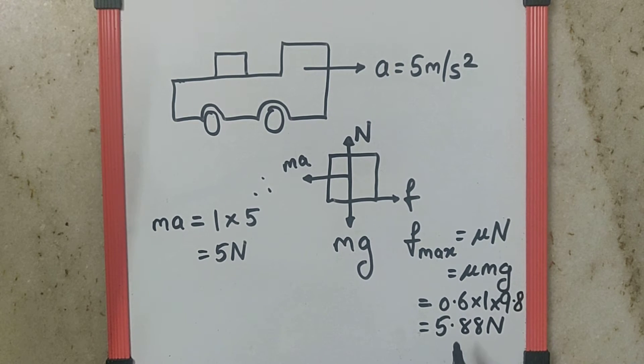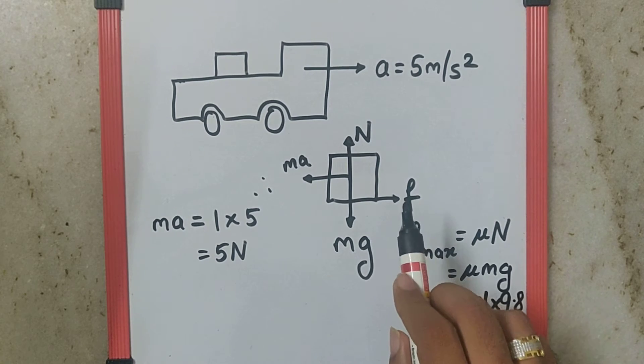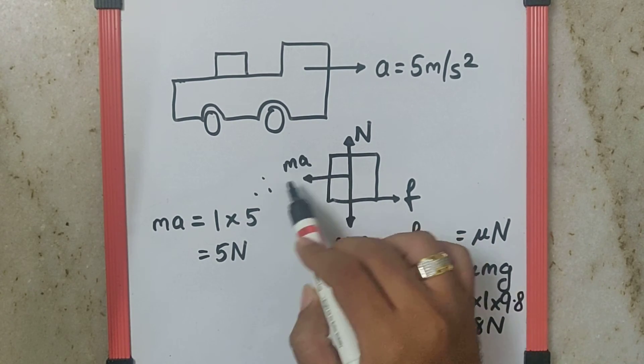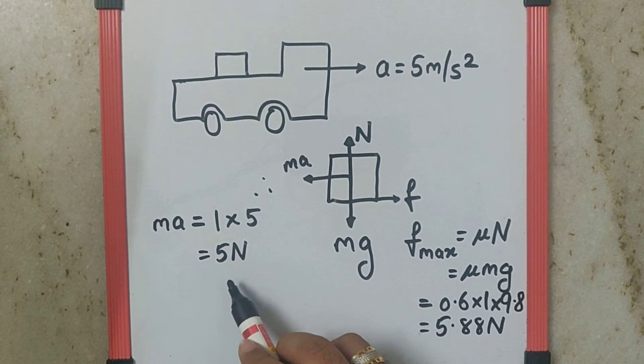This is the maximum friction force which can be provided. But as you can see, the required force to stop the pseudo force is only 5N,